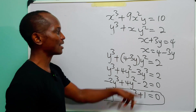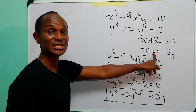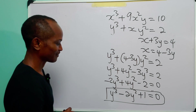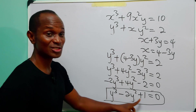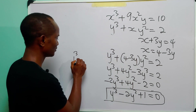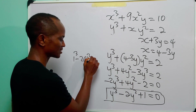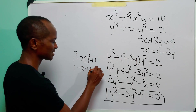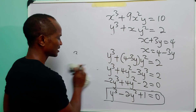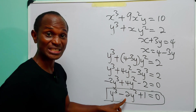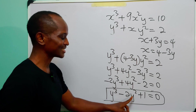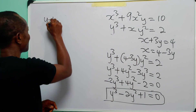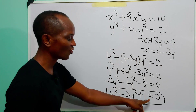We can solve this equation for y and then substitute to get x. Let us check if y = 1 is a solution: 1³ − 2(1²) + 1 = 1 − 2 + 1 = 0. Yes, so 1 is a solution, and by the factor theorem, (y − 1) is a factor.